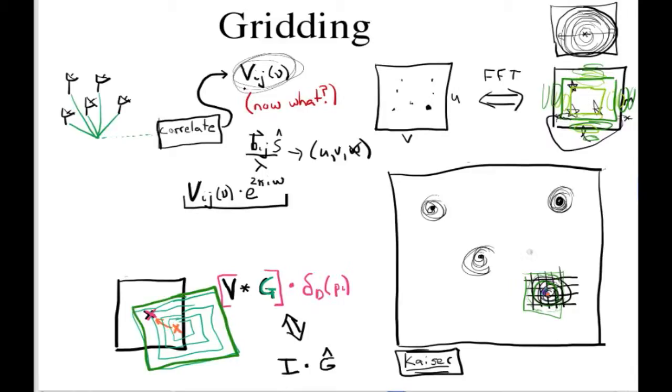Now one example of something that you might be interested in doing is overall providing a window function that maybe goes to zero towards the edge of your UV plane in either direction so that you're effectively convolving your image by the Fourier transform of that windowing function in order to reduce side lobes around sources that come about as a result of your sparse sampling of the UV plane.